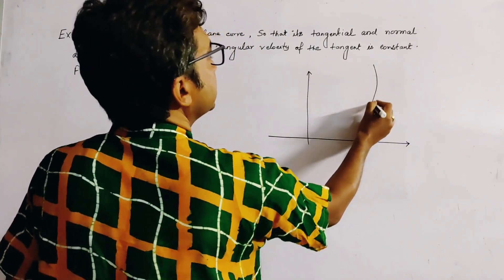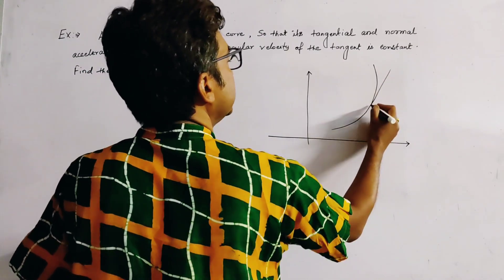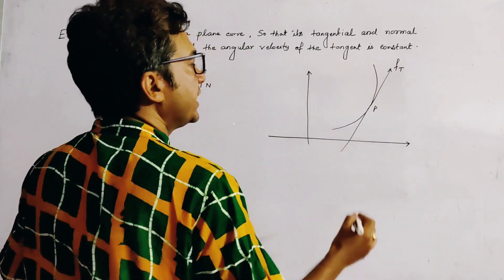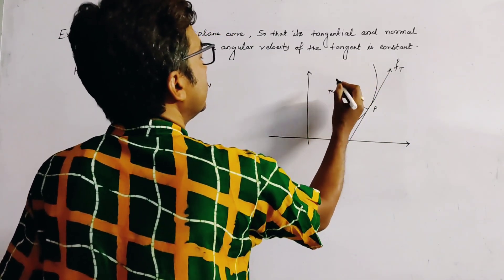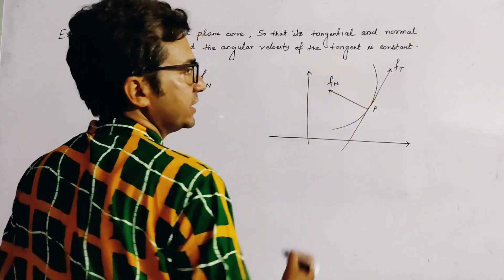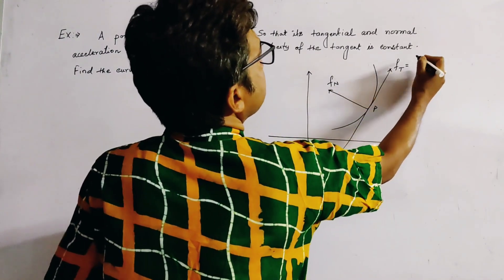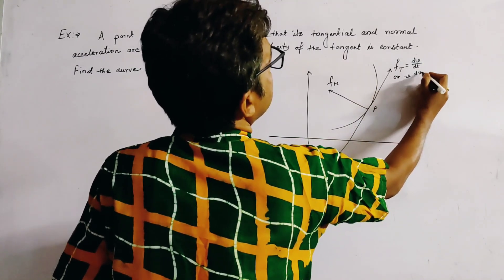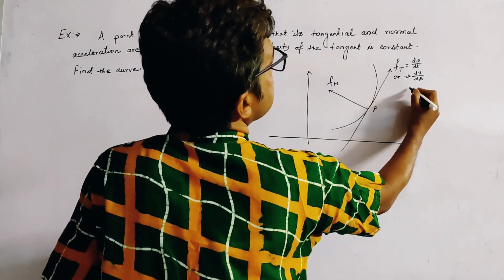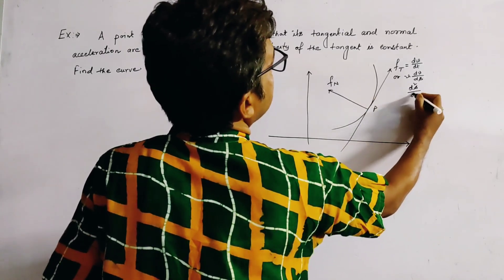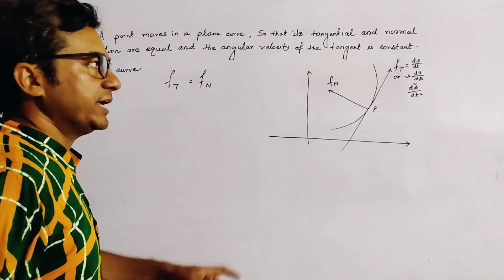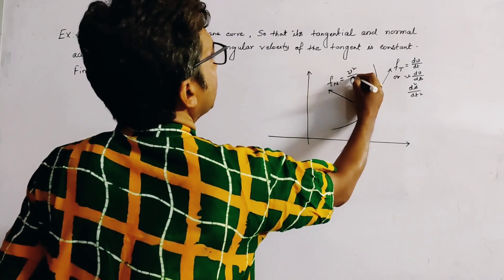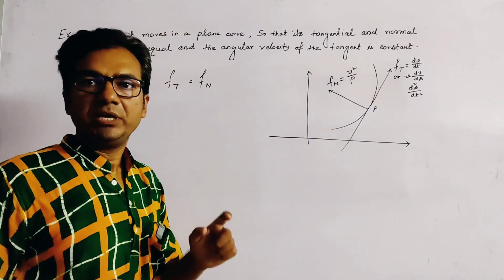We draw a rough figure. Let this be the curve at any point P. This is the tangent direction in which tangential acceleration acts, and this is the normal direction in which normal acceleration acts. We know that Ft equals dv/dt, or dv/ds, and Fn equals v²/ρ, where ρ is the radius of curvature and v is the velocity.